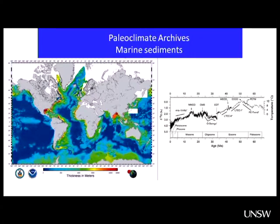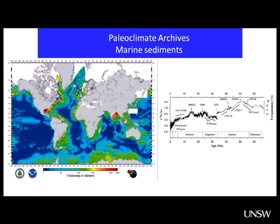Marine sediment cores are fantastic because if you go to a low sedimentation rate area, you can get information over the last 60 million years. They are coarser resolution, but you can easily get 20,000 years; many cores span the last interglacial at 150,000 years, and some go back to a million years or more. It's a continuous record that can give you changes over time in a very nice manner.